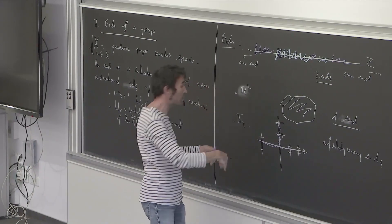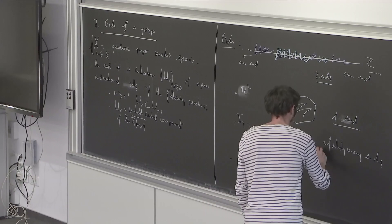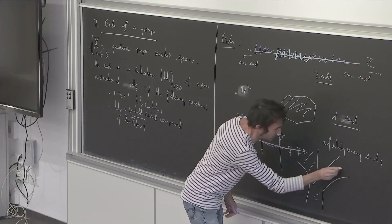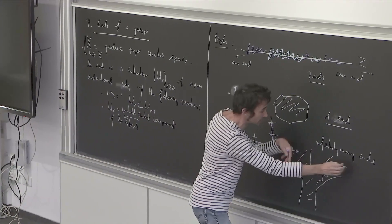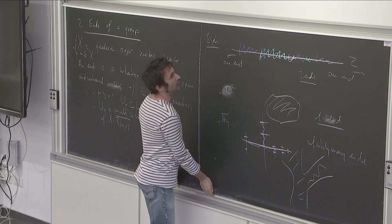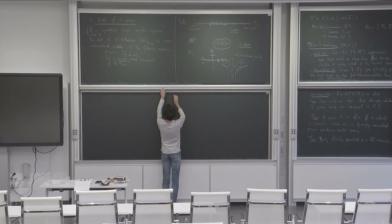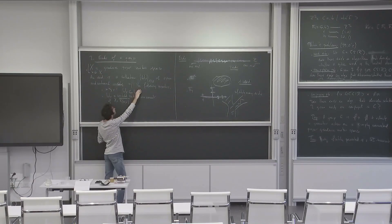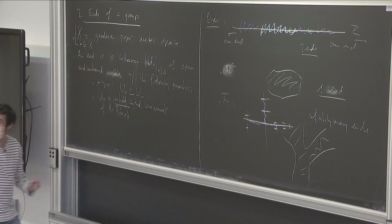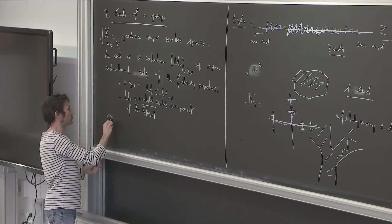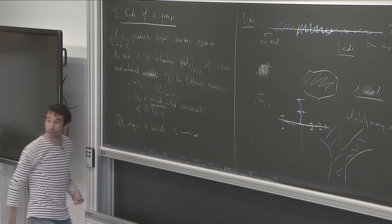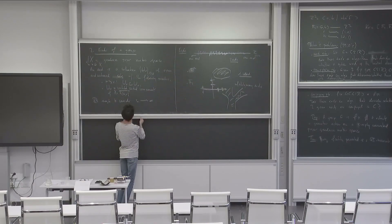We can have an arbitrary number of ends in general. For instance, if you want to have three ends, you take a shape like a tripod — each time you cut with a ball, you see three unbounded components. Actually in the definition, it is enough to consider a sequence r_n going to infinity to compute the number of ends, rather than uncountably many radii. That's what we do in practice.